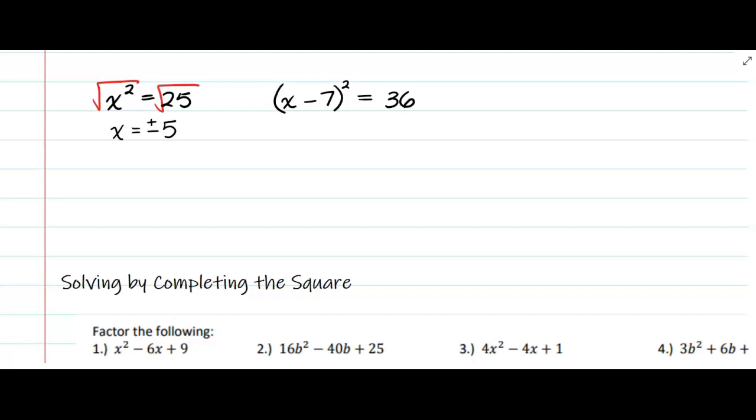Again, I'm still trying to get x by itself. So the first thing I do is take the square root of both sides, which leaves just x - 7 on the left and plus or minus 6 on the right.